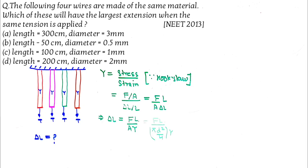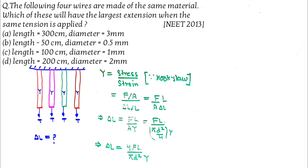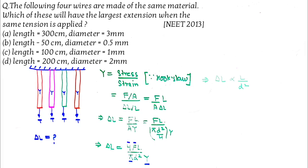Since area is basically pi d squared by 4, this means delta l equals 4 f l by d squared into Y. Since 4, f, pi, and Y are constant, delta l is directly proportional to length divided by diameter squared.